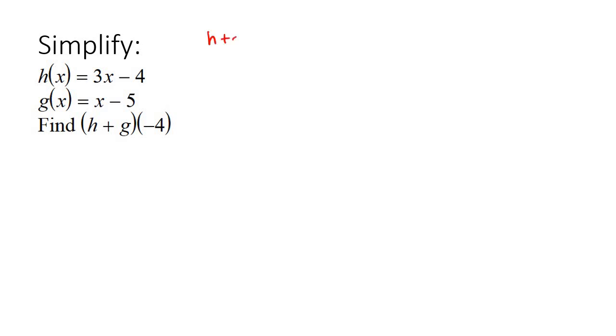So we're going to go h plus g. So let's just first go add them together. So we're just going to leave it as x. So that's going to be 3x take away 4, plus x take away 5. And that's going to give us 4x, because that's what those two give. And then negative 9. There we go.